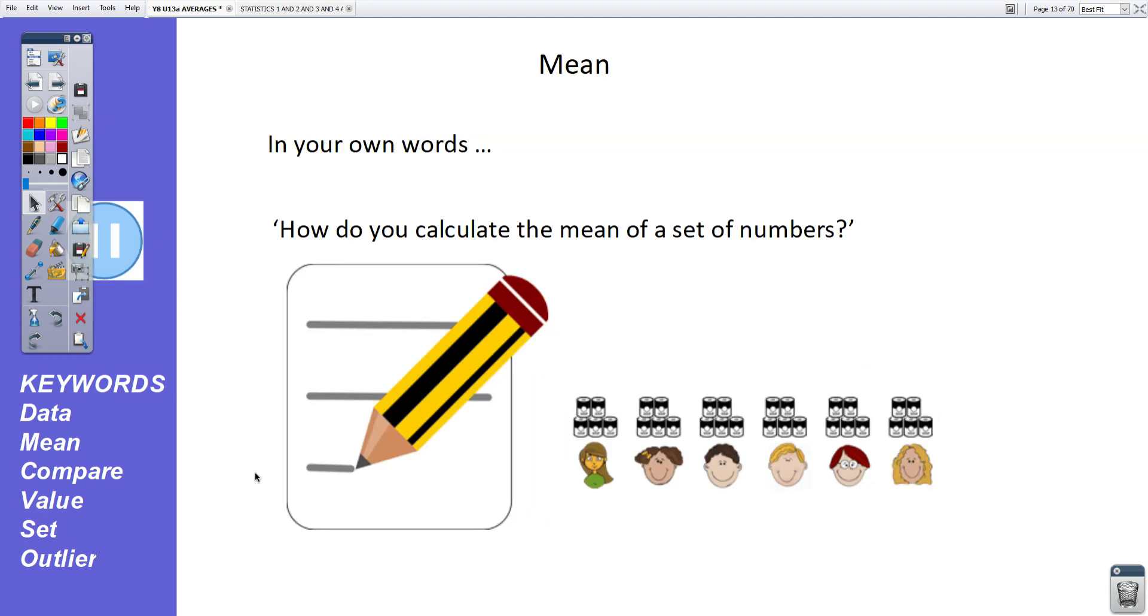Let's move on. So, in your own words, how do you calculate the mean of a set of numbers? Pause the video again and try and write down an exact definition of what we mean by the mean. Okay, let's see if you've got a decent definition. It's where you add up all the data values, then divide by how many data values there are. Okay, it's very important that you fully understand that definition of the mean. Very, very important.